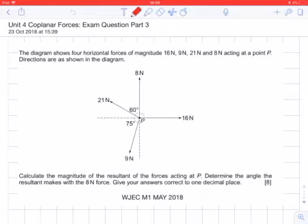The diagram shows four horizontal forces of magnitude 16N, 9N, 21N and 8N acting in a horizontal plane at a point P. We need to calculate the magnitude of the resultant of the forces, determine the angle the resultant makes with the 8 newton force, and give answers correct to one decimal place.